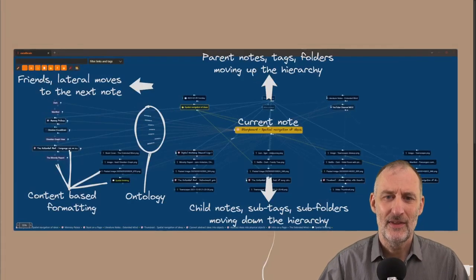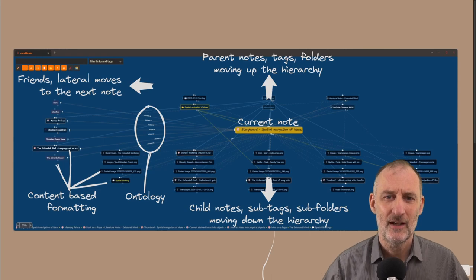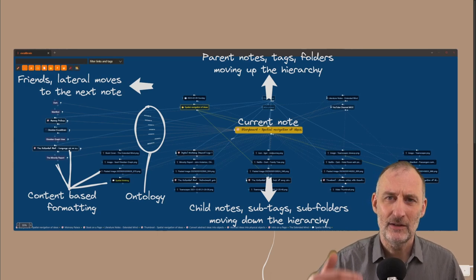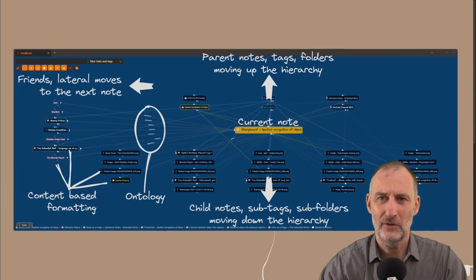Now, if I look at the Excalibrain view for the same document, then here you can see that Excalibrain provides me with structure. I have the parent nodes at the top. I have the child nodes, so nodes further down in the hierarchy at the bottom.